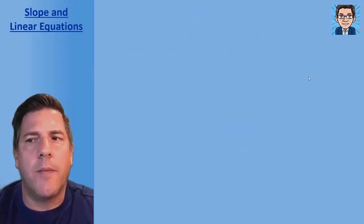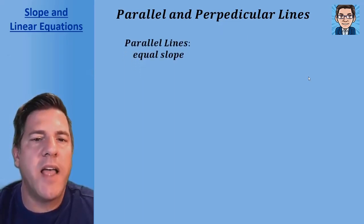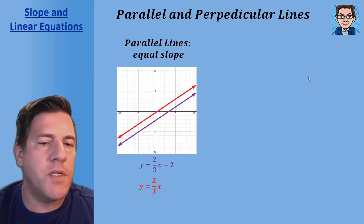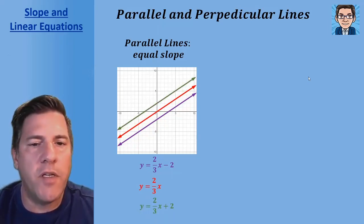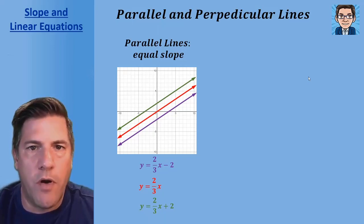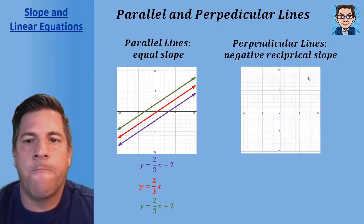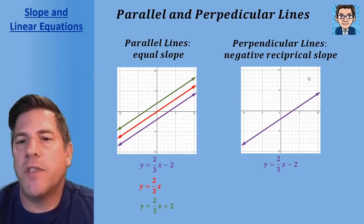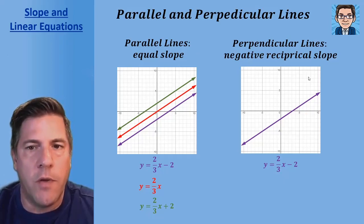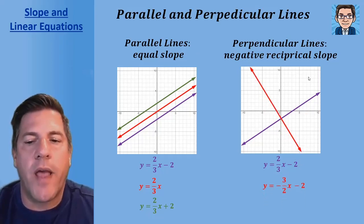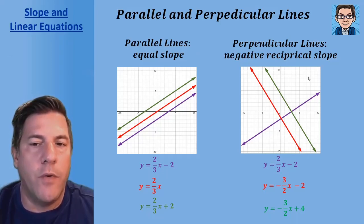Parallel lines have equal slopes. Looking at y equals two-thirds x minus two, any line with the same slope — like y equals two-thirds x or y equals two-thirds x plus two — will be parallel. Perpendicular lines have a negative reciprocal slope. For y equals two-thirds x minus two, first flip two-thirds to get three over two, then make it negative. So y equals negative three-halves x minus two is perpendicular, and any line with slope negative three over two is perpendicular to our line with slope two over three.